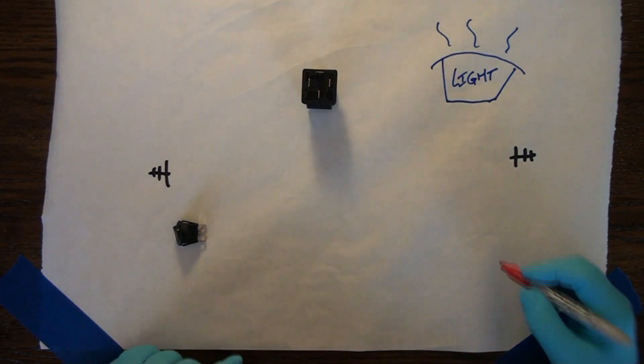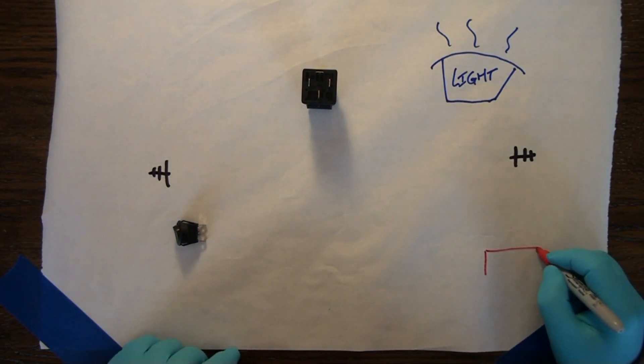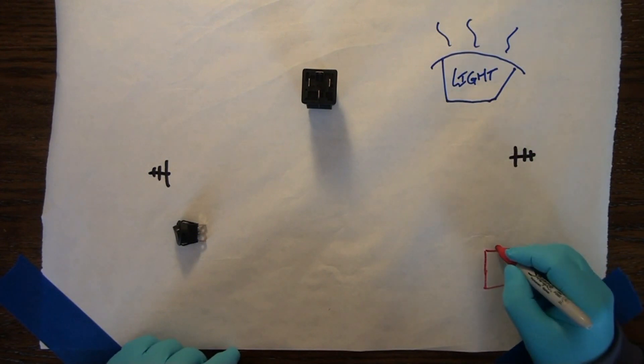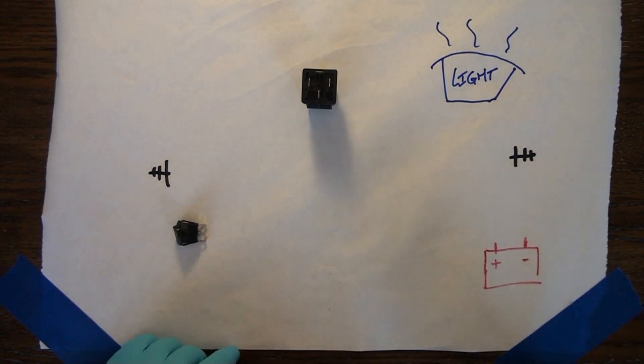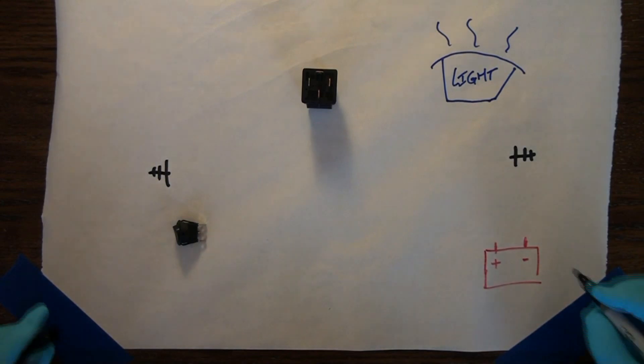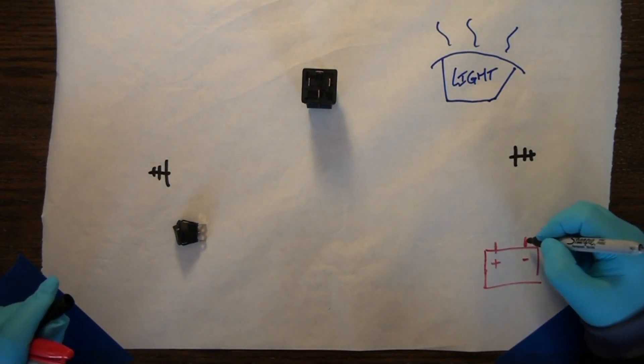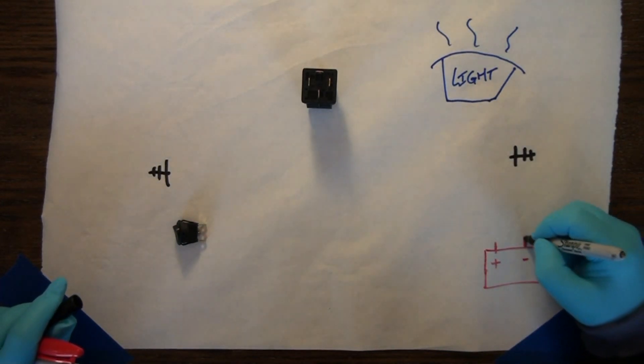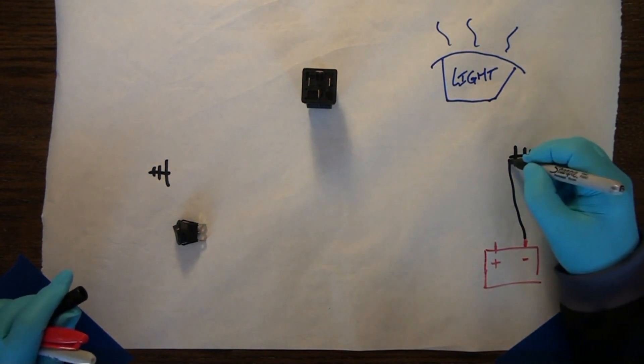The next thing we need is a battery. Let's start with a battery over here with two terminals—this one is positive, this one is negative. We're going to just assume that you understand that all negative terminals of a battery are connected to ground.